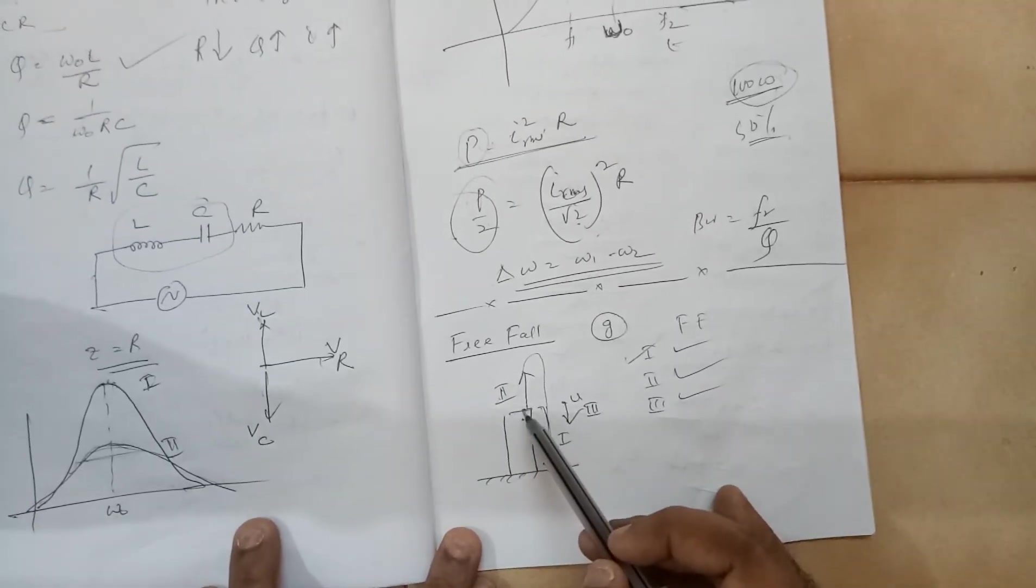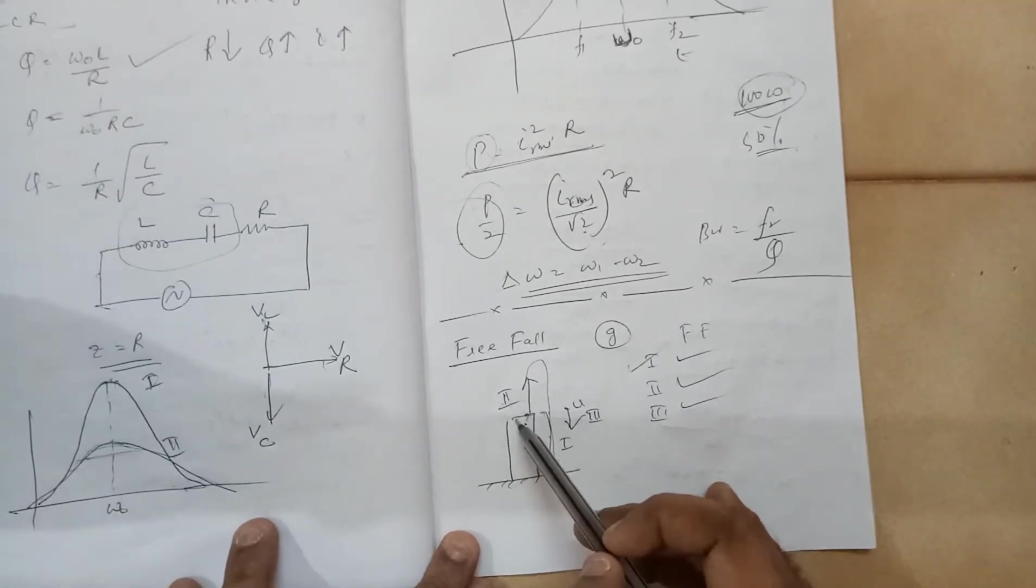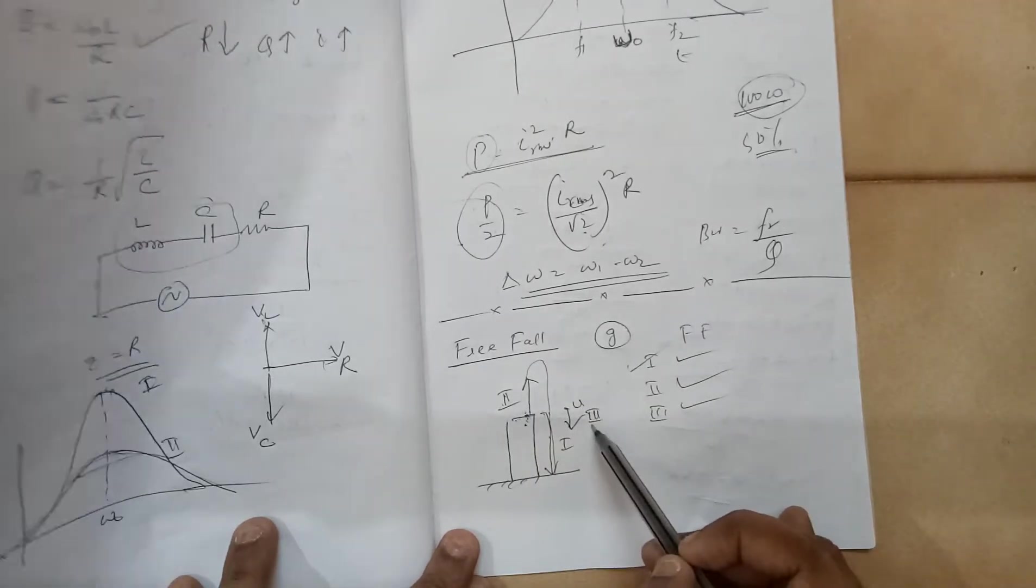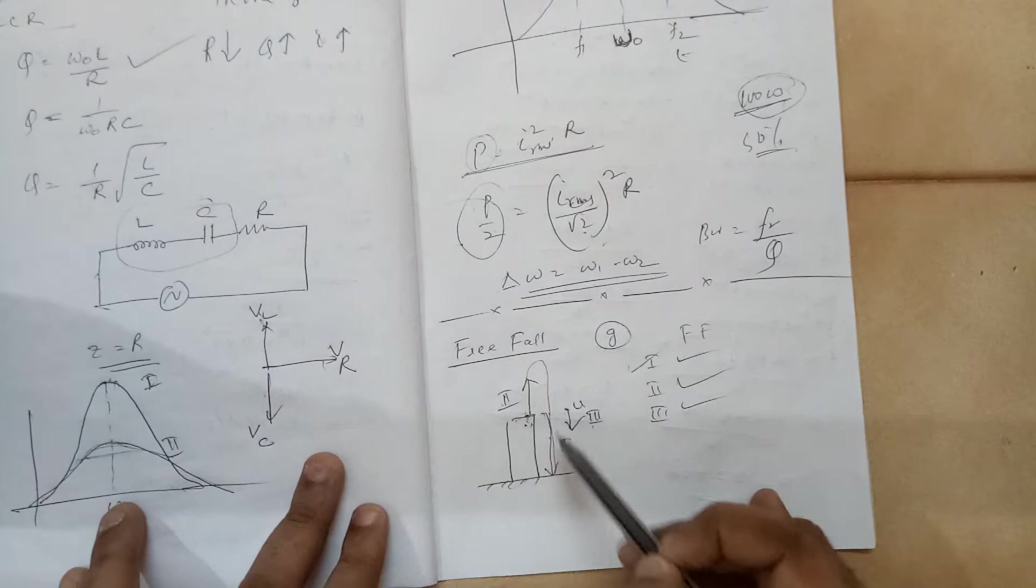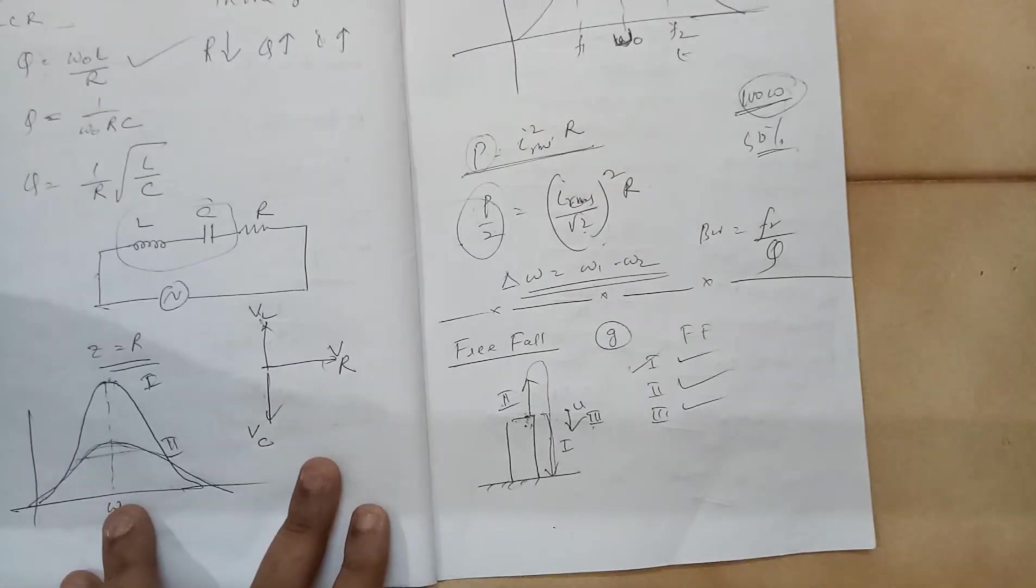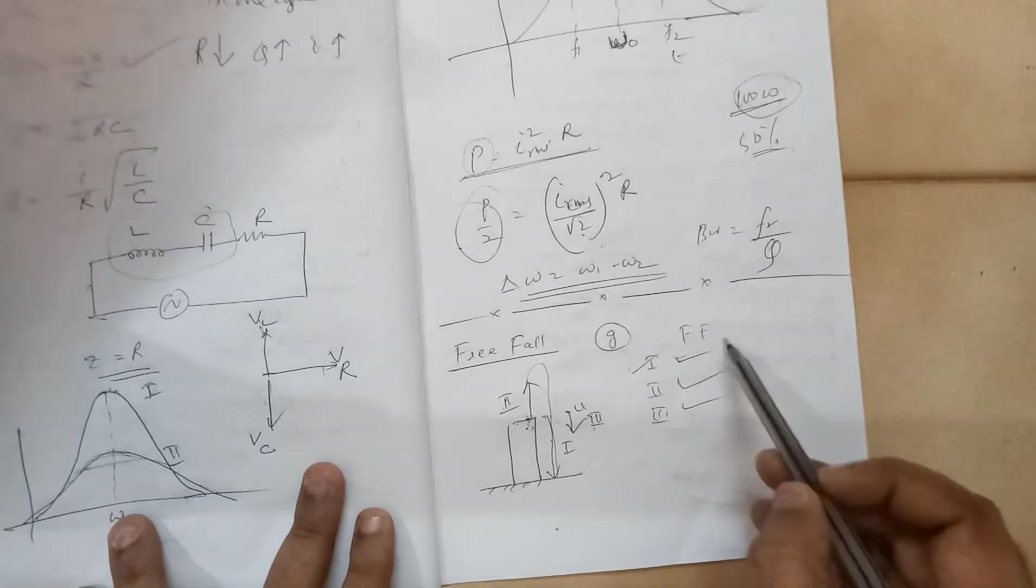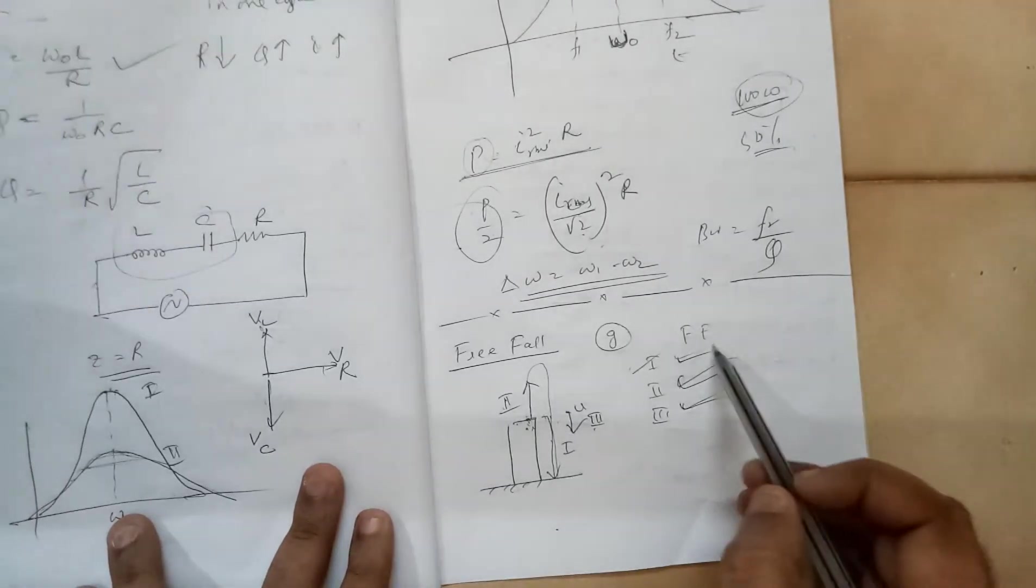Case 2 is you throw the object with some speed in the vertically upward direction. Case 3, you throw the object in the vertically downward direction. Which do you think is the case of free fall? I would say all three are the cases of free fall.